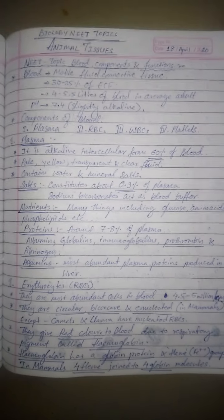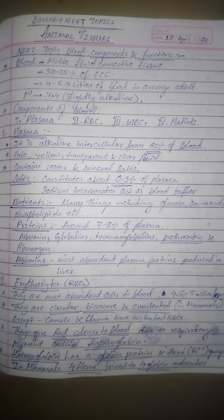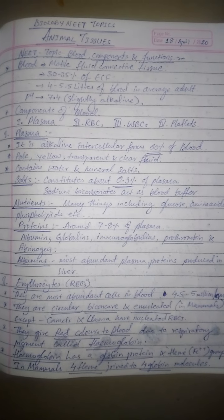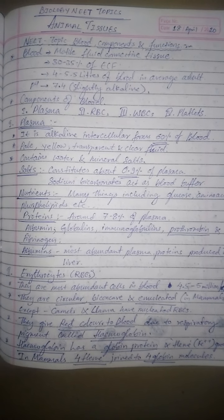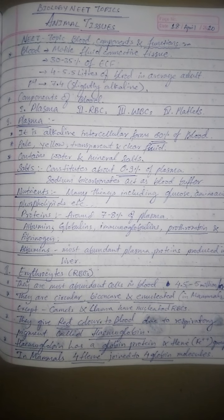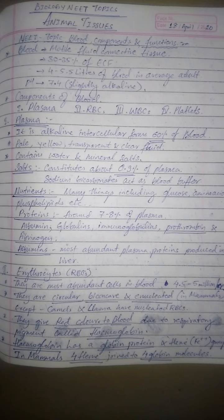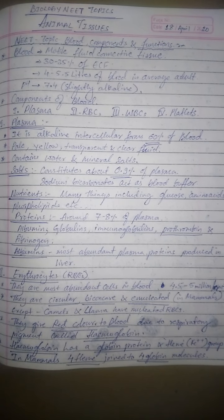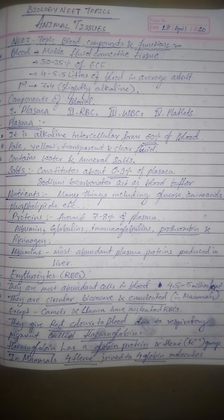Now talking about erythrocytes or RBC: the most abundant cells in the blood are erythrocytes. The full form of RBC is red blood corpuscles or red blood cells. Because they impart a red color to the blood, they are called red blood cells. They are the most abundant cells in the blood, ranging around 4.5 to 5 million cells per cubic millimeter of blood.